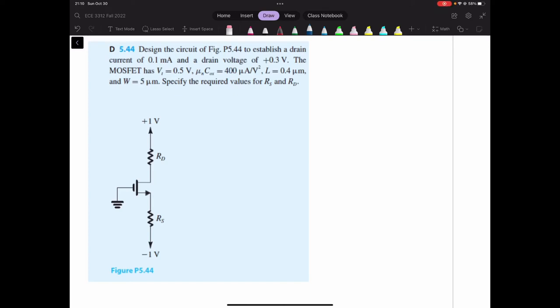Let's do problem 5.44. In this problem, we want to design the circuit that you see over here to establish a drain current of 0.1 milliamp, so ID is 0.1 milliamps, and a drain voltage of positive 0.3 volts, so VD is 0.3 volts.